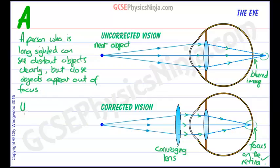So we can use a converging lens to correct long sight.